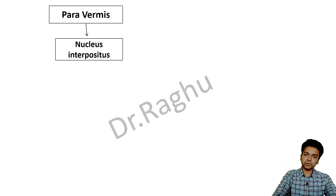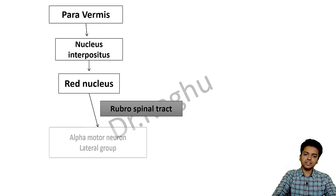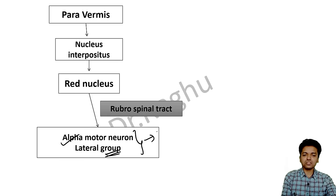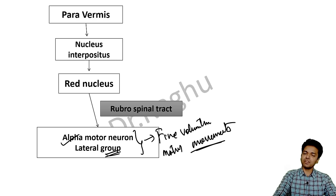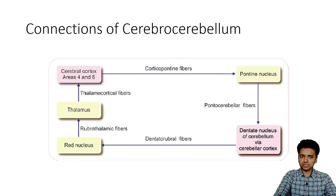The paravermis portion of the spinocerebellum projects to the nucleus interpositus. From the nucleus interpositus, fibers go to the red nucleus of the brainstem, from which the rubrospinal tract arises and projects to the lateral group of alpha motor neurons — which are concerned with fine voluntary motor movements.